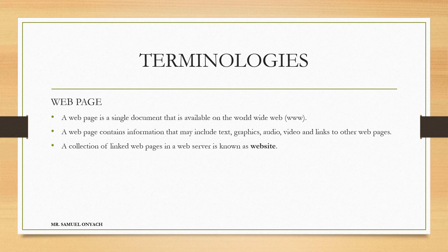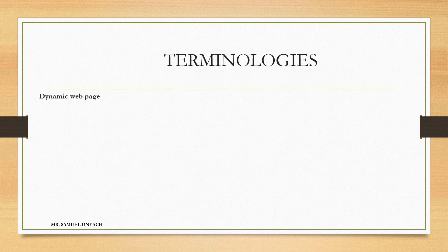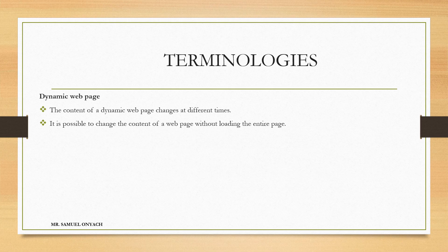A collection of several web pages together is known as a website. There are two types of web pages: static web pages and dynamic web pages. A static web page is loaded on the client browser exactly as it is stored on the web server — it only contains static information and is written using HTML only. A dynamic web page, on the other hand, is one whose content may change at different points in time, and it is possible to change its content without loading the entire page.